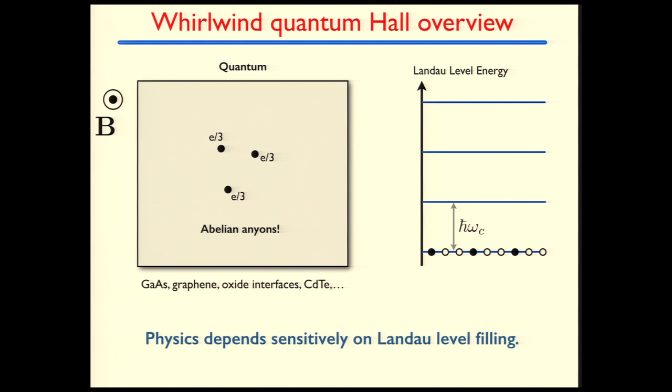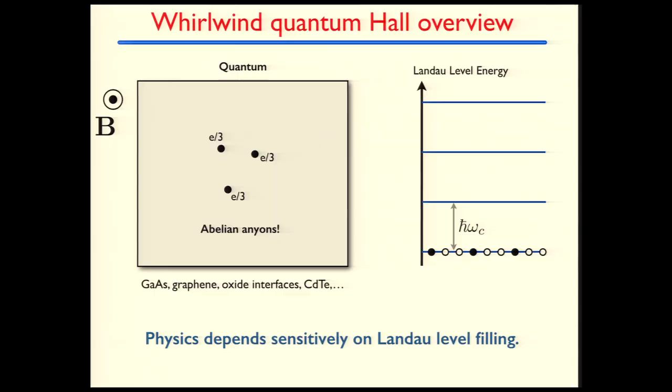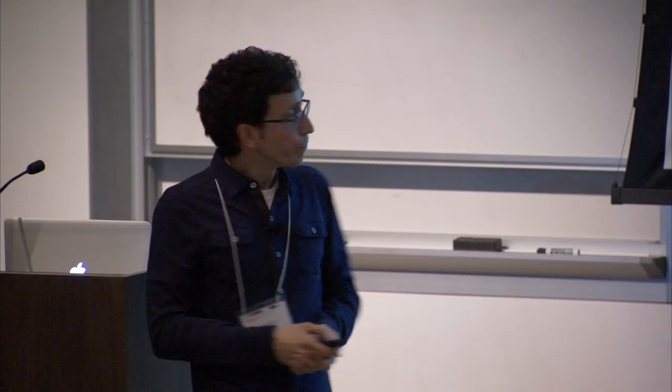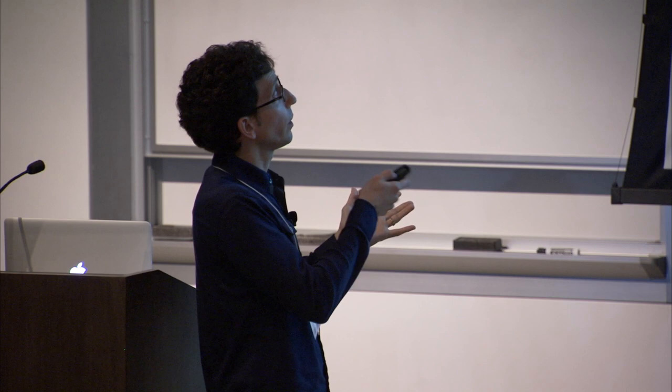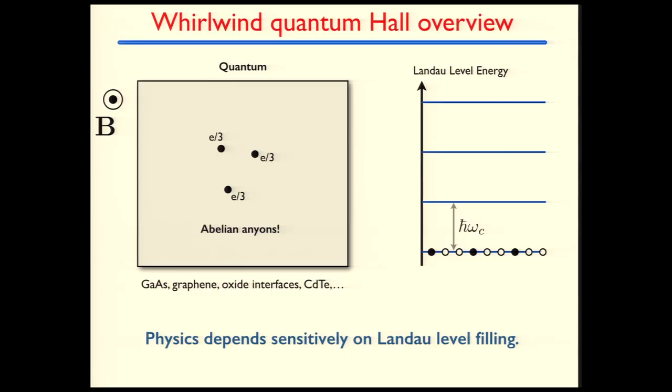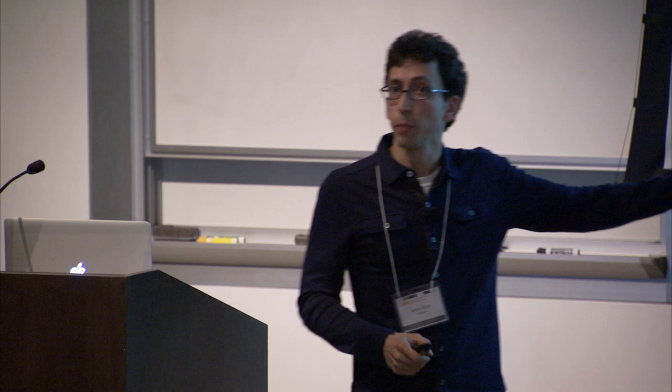What's much more interesting and non-trivial is what happens when you have only a fraction of a Landau level full. Imagine that it's exactly one-third full. In this case, interactions conspire to generate a very interesting fractionalized phase of matter in which the elementary excitations no longer carry charge E, but instead they carry a fraction of the electron charge, despite the fact that the electron is an individual particle. Inside of this one-third filled Landau level system, there will be excitations which carry charge E over 3, and remarkably, those E over 3 excitations are realizations of Abelian anyons. So far what I'm describing is certainly very beautiful and exotic physics, but this is really state-of-the-art around 1980s. This has been well-established since the 1980s, and nowadays you can see these kind of fractionalized phases in a variety of different materials: gallium arsenide, quantum wells, graphene, oxide interfaces, cadmium telluride, and many others. That's the end of my quick primer, just a broad overview of quantum Hall physics.